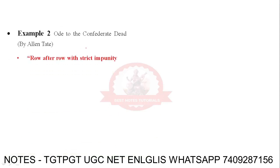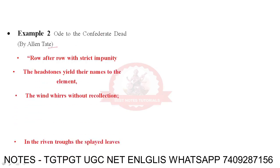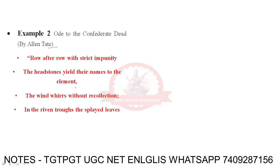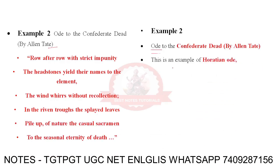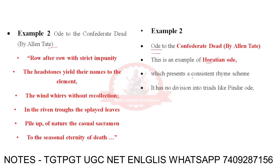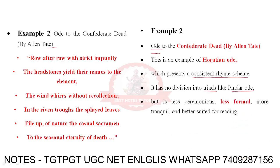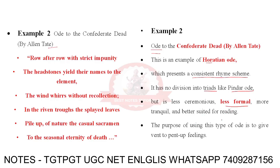Example 2: Ode to Confederate Dead by Alan Tate. 'Row after row with strict impunity, the headstones yield their names to the elements. The wind whirrs without recollection in the raven tropes; they splayed leaves pile up of nature and casual sacrament to the seasonal eternity of death.' This is an example of a Horatian ode, which presents a consistent rhyme scheme. It has no division into triads like a Pindaric ode, but is less ceremonious, less formal, more tranquil, and better suited for reading.